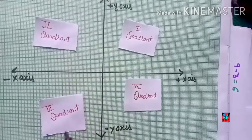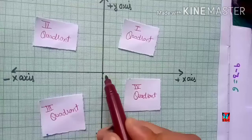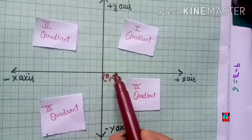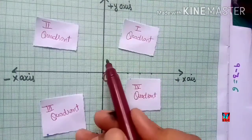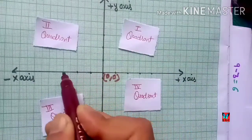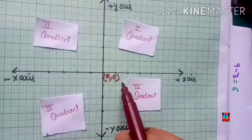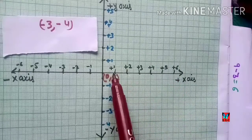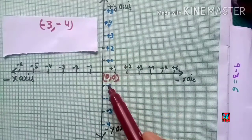This is the first quadrant, second quadrant, third quadrant, and fourth quadrant. The center point is the origin — the point of intersection of the x-axis and y-axis — and its coordinates are (0, 0). We mark equal divisions with positive and negative counting on both axes.